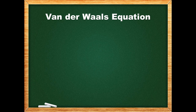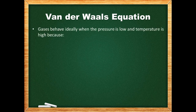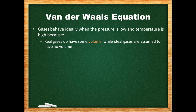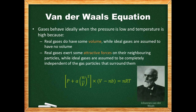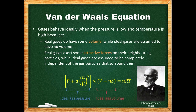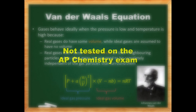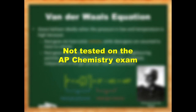We've talked about ideal gases already. Ideal behavior is most present at low pressures and high temperatures. This is because real gases do have some volume while ideal gases are assumed to have no volume, and real gases exert some attractive forces on their neighboring particles while ideal gases are assumed to be completely independent of surrounding particles. In 1873, Johannes van der Waals modified the ideal gas law to fit the behavior of real gases, involving two small correction factors. The first, which includes an A factor, accounts for intermolecular forces between gas particles — adding this to the actual pressure yields the pressure if the gas were ideal. The second includes a B factor and corrects for the volume of the gas particles themselves — subtracting this from the actual volume yields the ideal gas volume. Recall that calculations involving the van der Waals equation are not tested on the AP Chemistry exam.